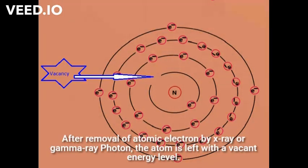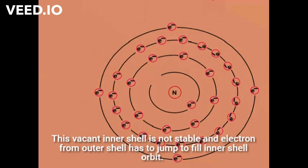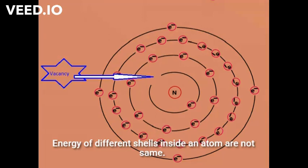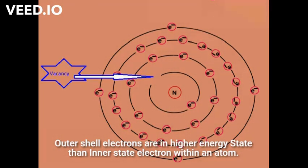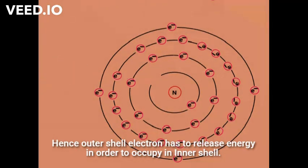After removal of an atomic electron by an X-ray or gamma ray photon, the atom is left with a vacant energy level. This vacant inner shell is not stable, and an electron from the outer shell has to jump to fill the inner shell orbit. The energy levels of different shells inside an atom are not the same — outer shell electrons are in a higher energy state than inner shell electrons. Hence, the outer shell electron has to release energy in order to occupy the inner shell.